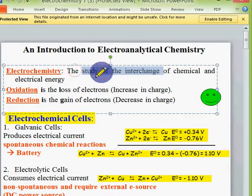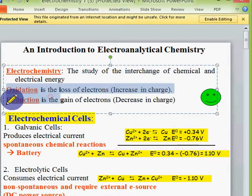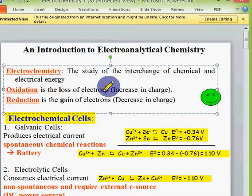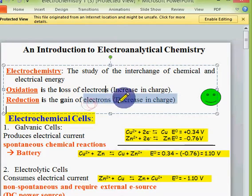Introduction to electrochemistry. The study of interchange of chemical and electrical energy is called electrochemistry. In electrochemistry, there are generally two types of reactions. One is oxidation, another one is reduction. Oxidation is the loss of electrons, that means increase in charge. Reduction is the gain of electrons or decrease in charge.